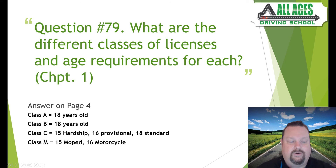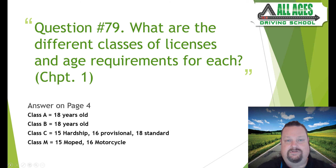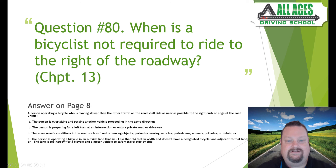Question number seventy-nine: what are the different classes of licenses and age requirements? Four classes, all on page 4. Class A is for 18-wheelers — must be 18. Class B allows driving a school bus — also 18. Class C can be obtained at 15 with a hardship, 16 with a provisional license, or 18 for a standard license. Class M allows driving a moped at 15 and a motorcycle at 16.